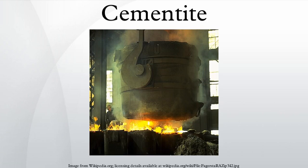A natural iron carbide occurs in iron meteorites and is called cohenite, after the German mineralogist Emil Cohen, who first described it. As carbon is one of the possible minor light alloy components of metallic planetary cores, the high-pressure, high-temperature properties of cementite as a simple proxy for cohenite are studied experimentally.